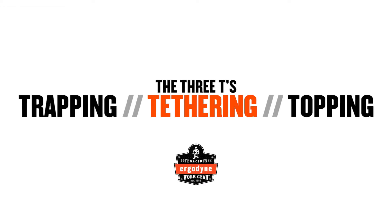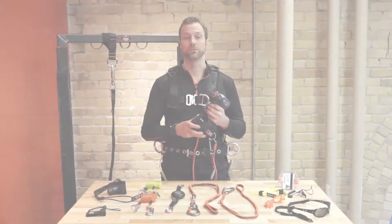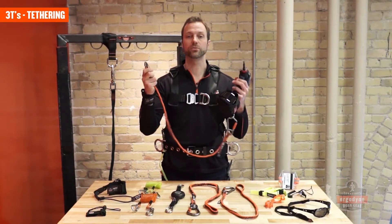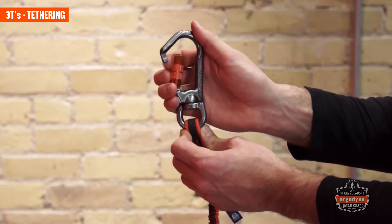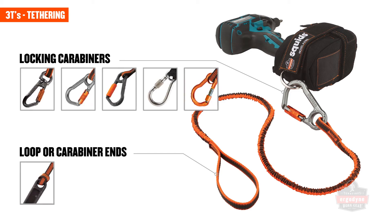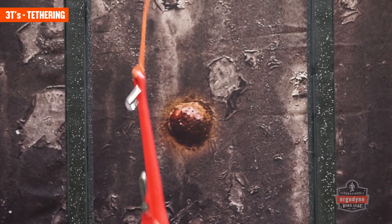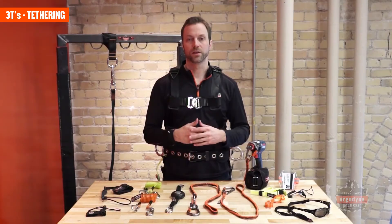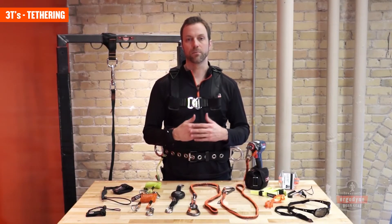Tethering is the retention of the tools and equipment being used to the anchor points that hold them. This is often achieved through the use of a tool lanyard. These lanyards should have the proper connections on each end for the tools and anchors being used. They should also be made with a shock absorbing design whenever possible. As tool tethering has evolved, a variety of tool lanyard styles have surfaced, but most fall into five basic categories.